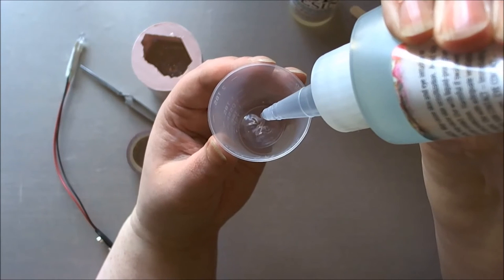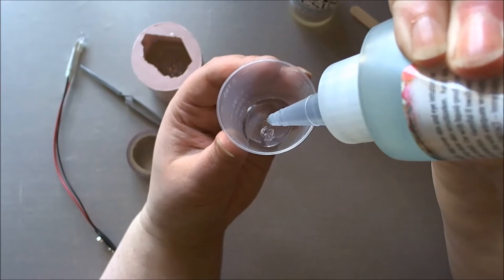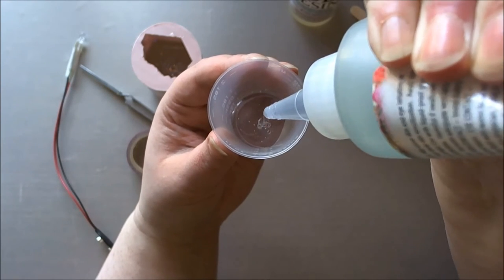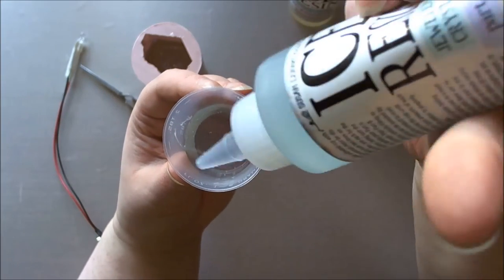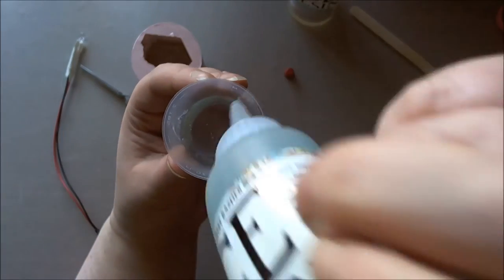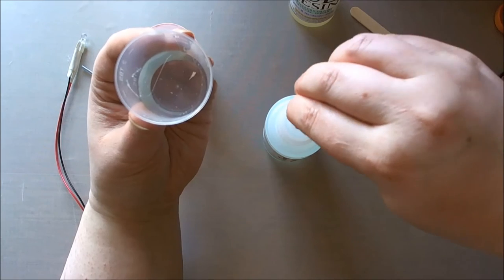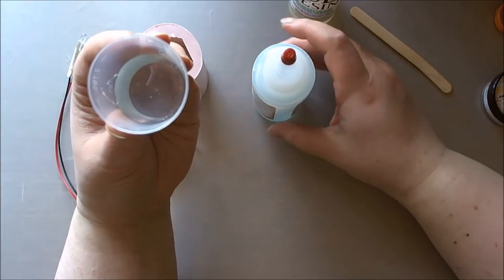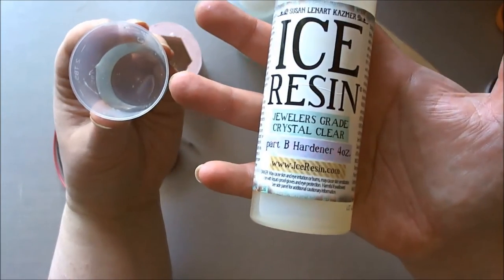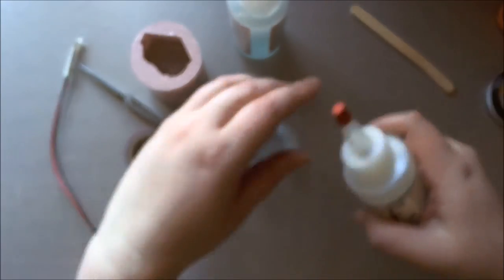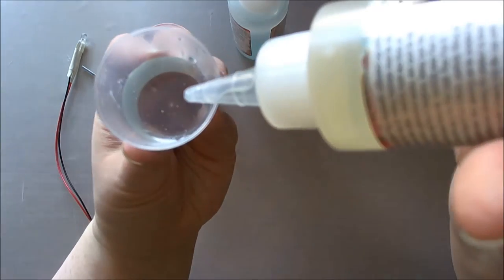So I'm going to fill this to the three dram line with part A. Okay, that is looking almost spot on to me for the three dram line. And to mix ice resin, you always start with A and then go on to B. And it is equal parts, one to one ratio. So now I need to top this up exactly to the six dram line.